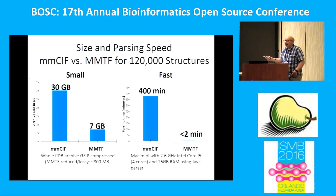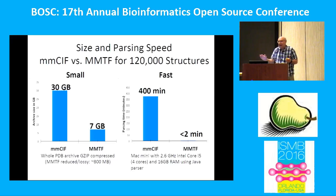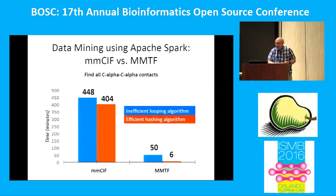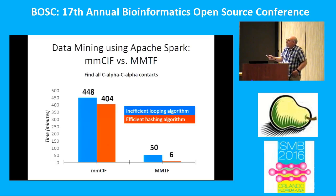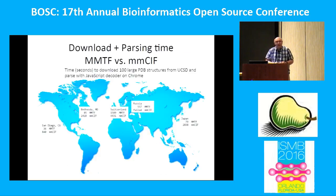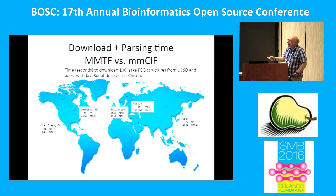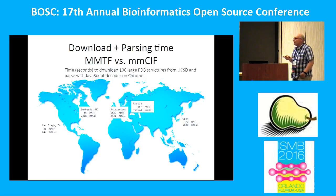More importantly than compression is speed. On a Mac mini with four cores, if you want to parse just once through the 120,000 structures, it takes about 400 minutes. Using MMTF, we can do that in less than two minutes. The goal is to get to interactive speed — interactive ad hoc analysis on PDB scale. For visualization, shipping 100 large structures over the continent to Bethesda takes 85 seconds using MMTF versus 2,400 seconds in the original format. In the same time, we can actually ship it over the Pacific to Japan.